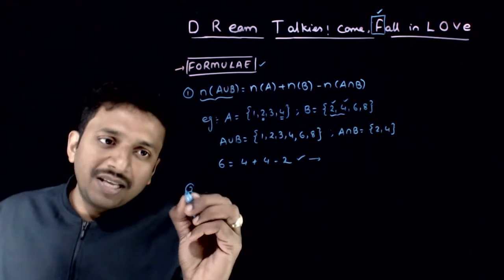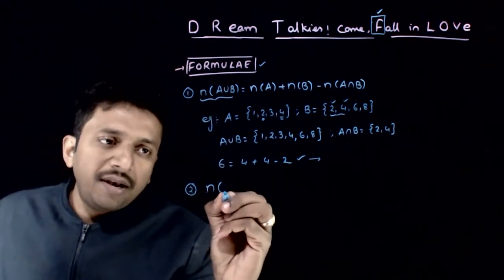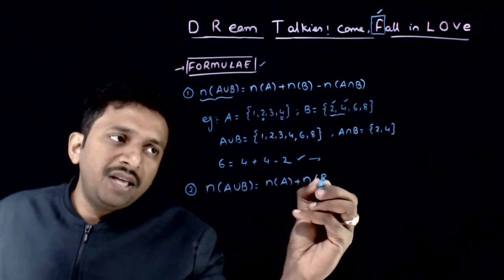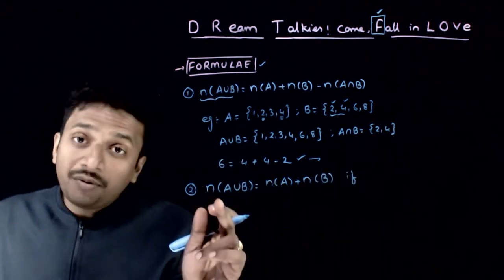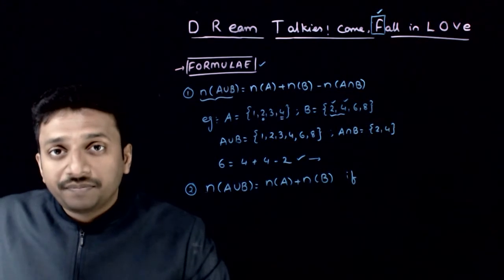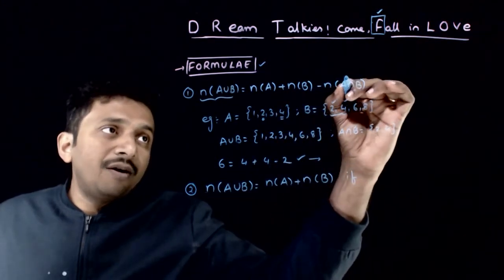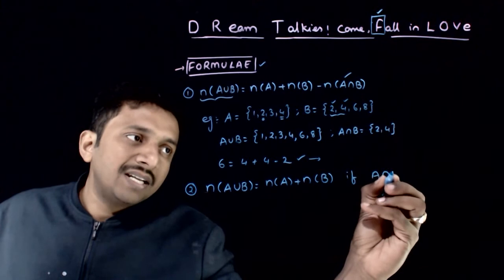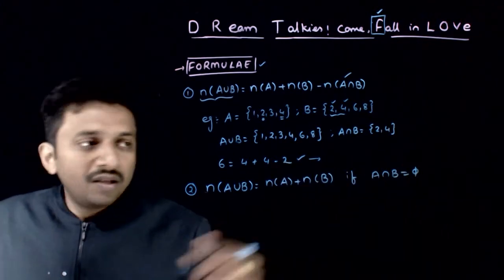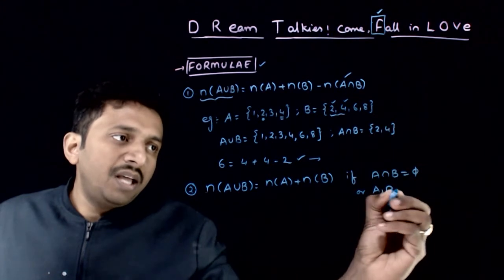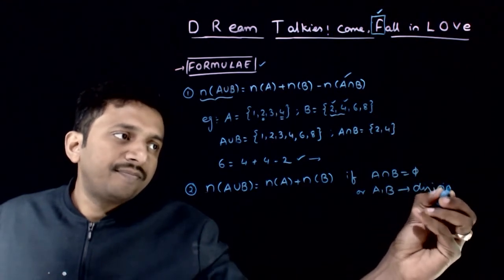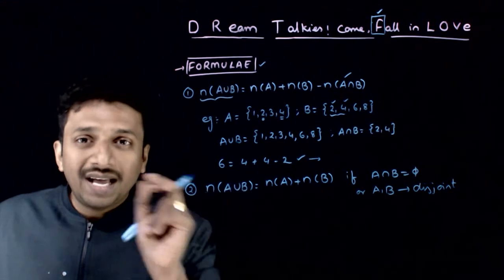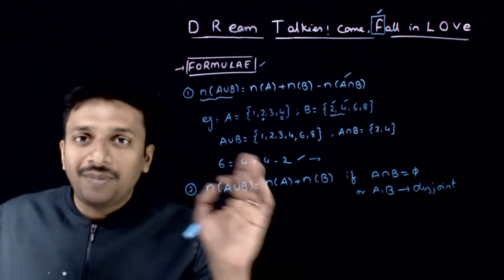Once you understand this property, there is a special case: n(A∪B) = n(A) + n(B) when n(A∩B) = 0, meaning there is no element in the intersection — that is, when A and B are disjoint sets. So in problems where A and B are disjoint sets, you can directly say n(A∪B) = n(A) + n(B).